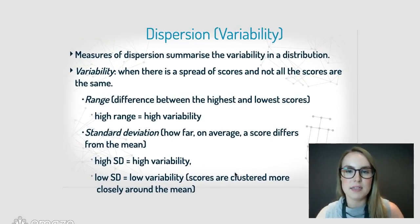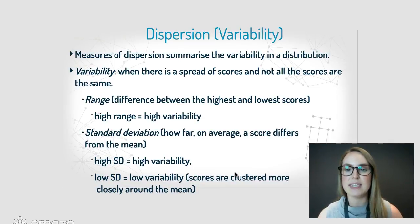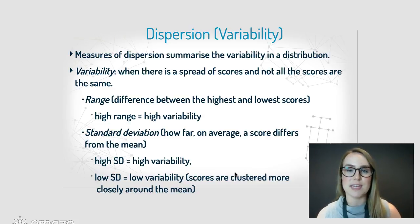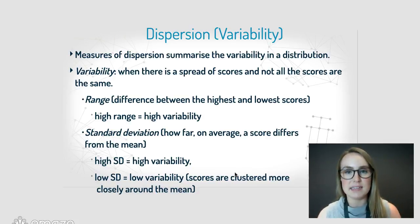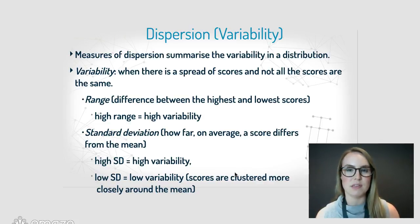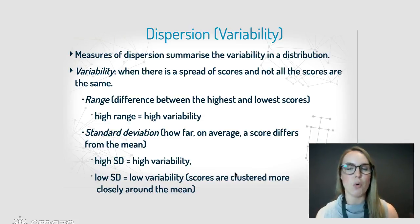Dispersion, also called variability, refers to the spread of scores — how different all the scores are. In psychology, we more often use standard deviation rather than range. Standard deviation is how far on average a score differs from the mean. A high standard deviation means high variability — everyone in the class got different results, some really good, some really bad, some average.